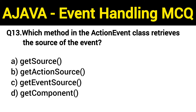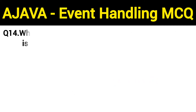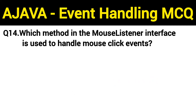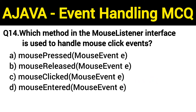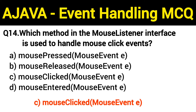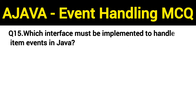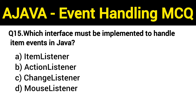Question number 13: which method in the ActionEvent class is used to retrieve the source of the event? The right answer is option A: getSource. Question number 14: which method in the MouseListener interface is used to handle mouse click events? The right answer is option C: mouseClicked(MouseEvent e). Question number 15: which interface must be implemented to handle item events in Java? The right answer is option A: ItemListener.